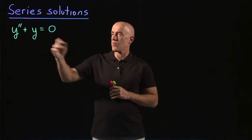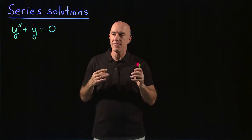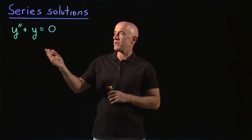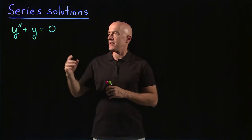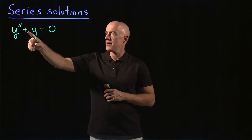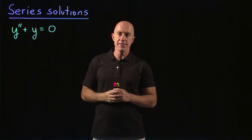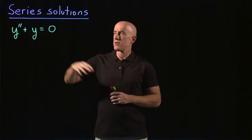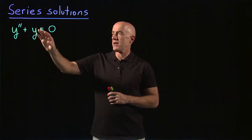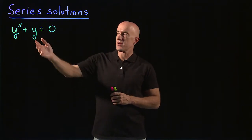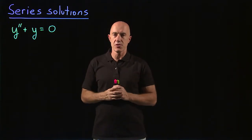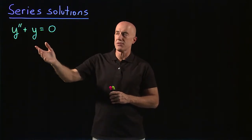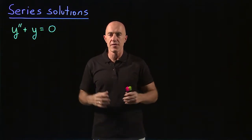We're looking at y double prime plus y equals zero, where y is a function of x. After taking a calculus course, you should be able to realize which function, when you take its derivative twice, you get back the negative of itself. You only know two functions of that type: cosine x and sine x. So the general solution should be a constant times cosine x plus another constant times sine x — a very simple equation. We're going to use this as a model just to show you the method of series solutions, since we know what the answer is supposed to be.